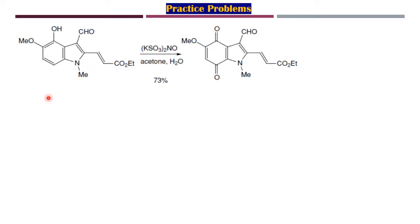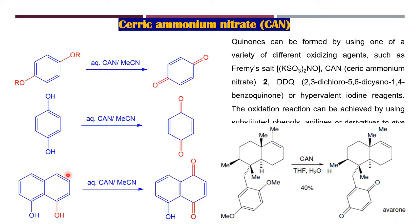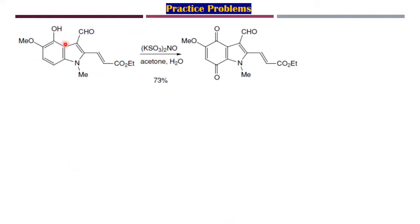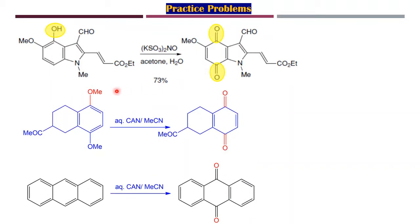Similarly, checking this ring in the next reaction — the OH here will get converted to C=O, and the para position will also get converted to C=O. Here we are using Fremy's salt, and this is the product formed. Using the same logic, this particular moiety will get converted to para-benzoquinol.